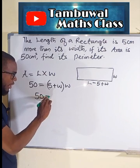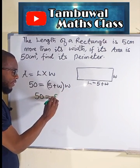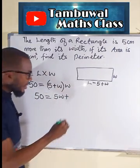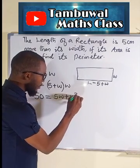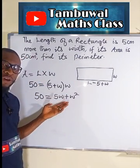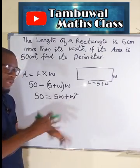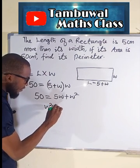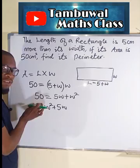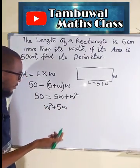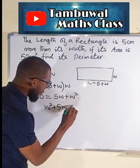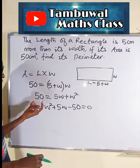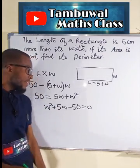50 will now be equal to w times 5, which is 5w, and w times w is w squared. So our expression is in quadratic form, which we can rearrange as w squared plus 5w. If 50 crosses over, it becomes negative 50, and we have equal to 0.